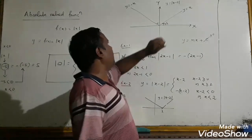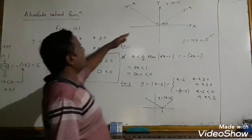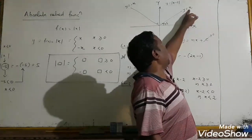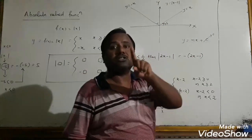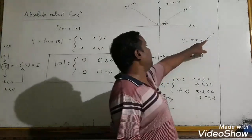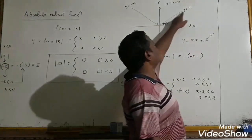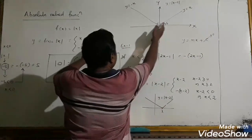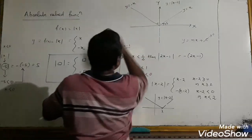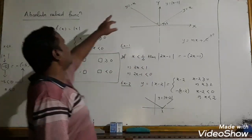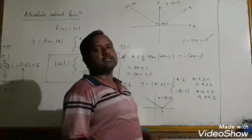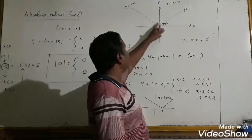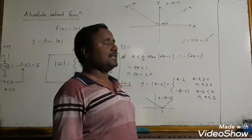The graph of y = mod x: y = x is a straight line passing through the origin with slope m = 1, making 45 degrees with the x-axis. y = −x passes through the origin with slope m = −1, making 135 degrees with the positive x-axis. For the condition x < 1/2: since 2x − 1 < 0, mod(2x − 1) = −(2x − 1).